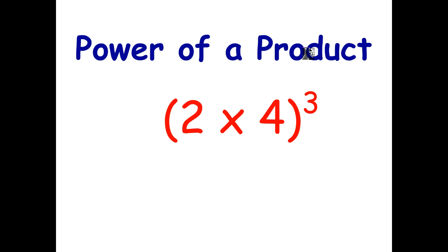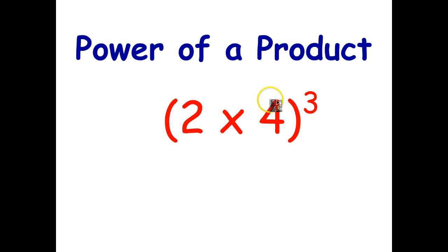A product just means two things that are multiplied together. So in this case, two times four is called a product. We've taken that product and raised it to the power of three. So this is an example of the power of a product.